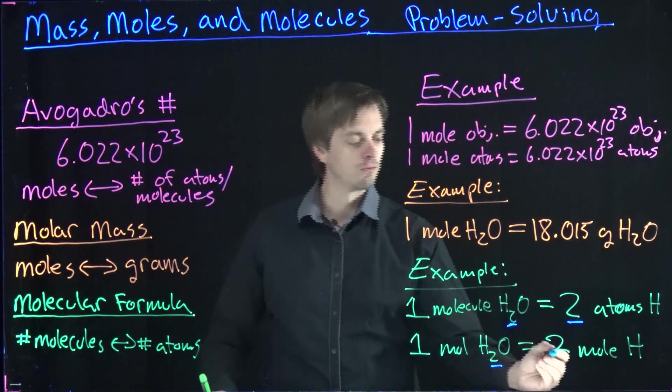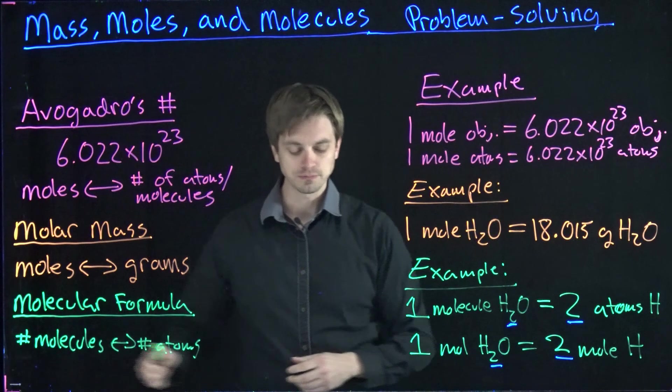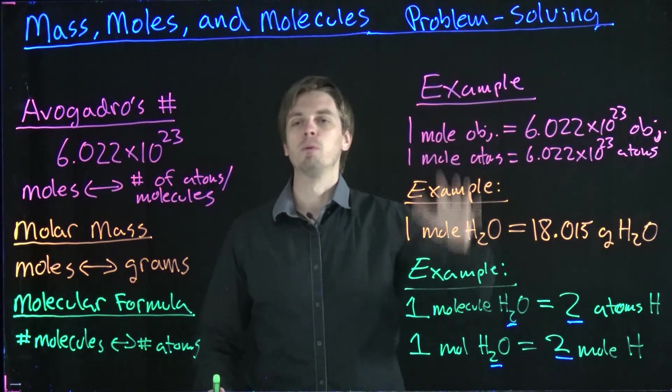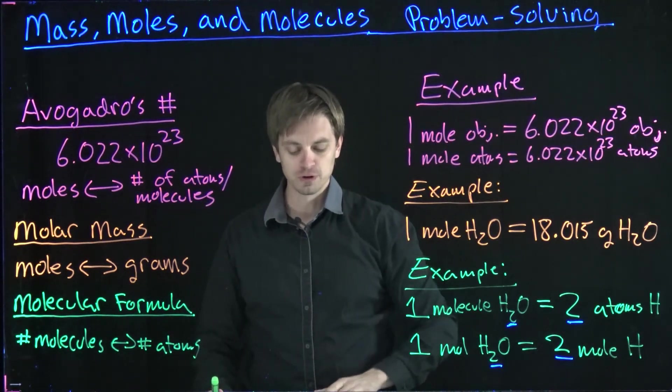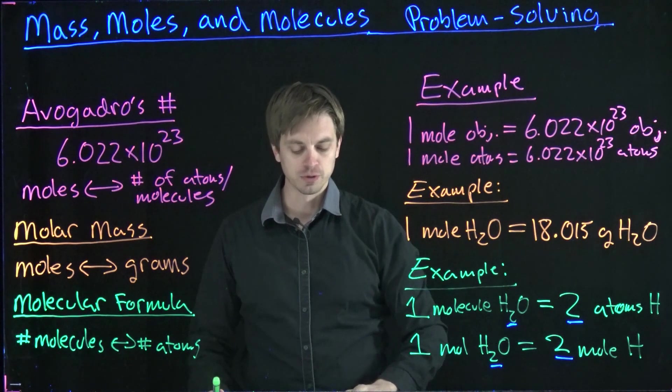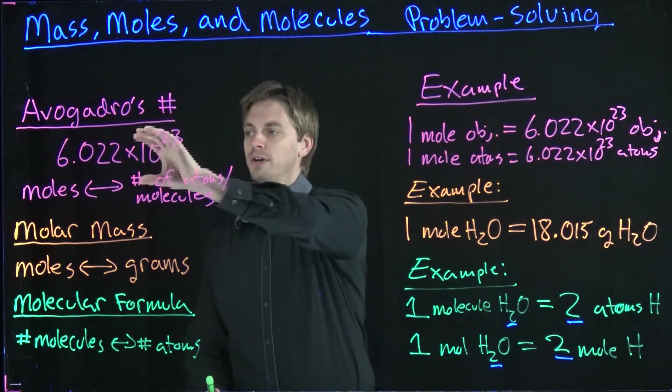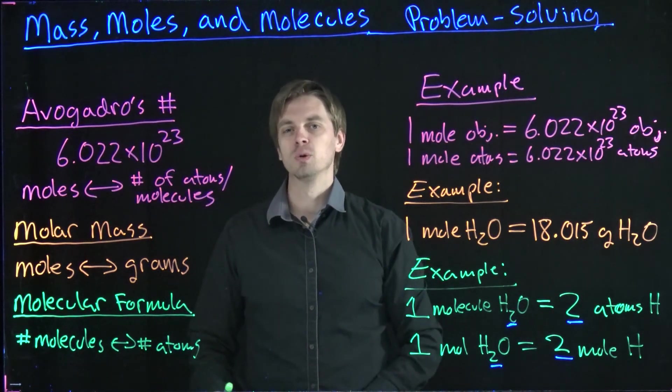In the next series of videos we're going to look at a bunch of example problems that basically require the application of each one of these tools. First off, we're going to be doing a conversion problem that requires us to use Avogadro's number to convert between moles of a substance and the number of individual atoms or molecules.